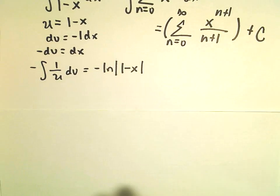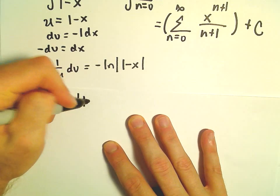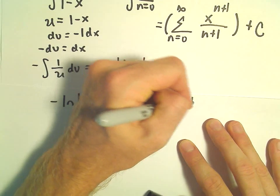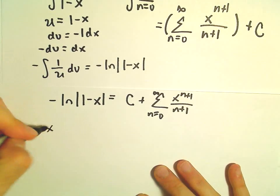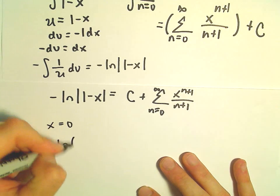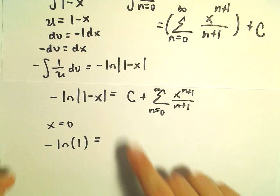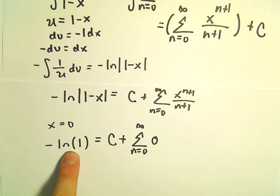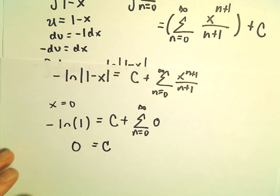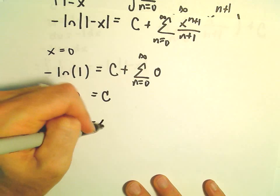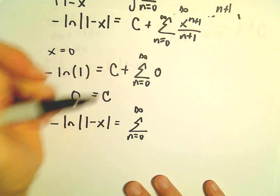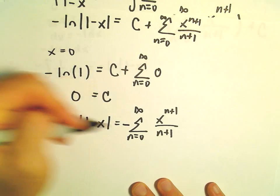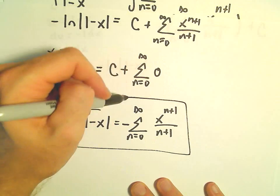So what we have at this point: negative the natural logarithm of 1 minus x equals C plus the series n equals 0 to infinity of x to the n plus 1 over n plus 1. If we let x equal 0, on the left we get negative ln(1), and on the right we get C plus a bunch of zeros. Since ln(1) equals 0, we get C equals 0. So negative ln(1 minus x) equals the series n equals 0 to infinity of x to the n plus 1 over n plus 1. We can multiply the negative over to get the series for ln(1 minus x).